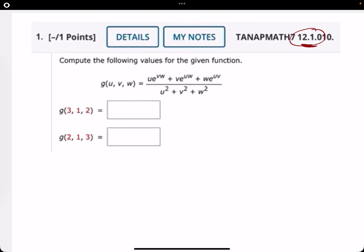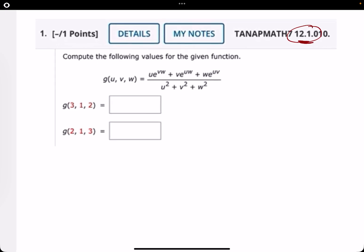In number 1, they say compute the following values for this given function. So this is a function of 3 variables, u, v, and w. And they're just asking us to find the g value for these different inputs of u, v, and w.